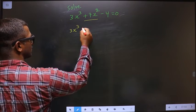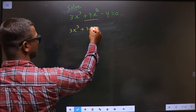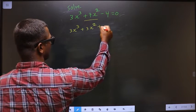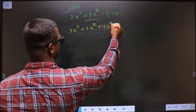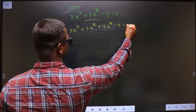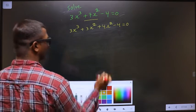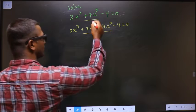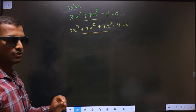In place of 7x², now I write 3x² + 4x². In place of 7x², I have written 3x² + 4x².